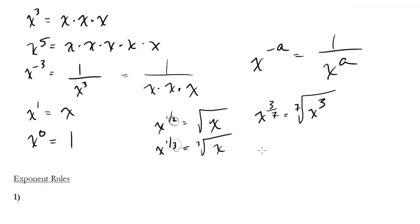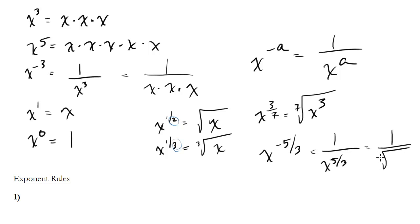We could even have something like x to the negative 5 thirds. Well, this is the same thing as 1 over x to the 5 thirds by our negative exponent rules. And then we can write that as 1 over the cube root of x to the fifth, because the 3 goes into the root and the 5 stays as the exponent.